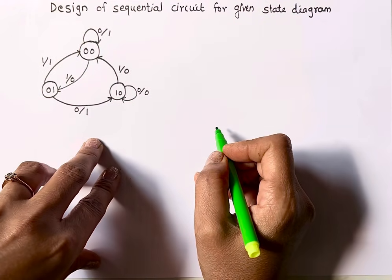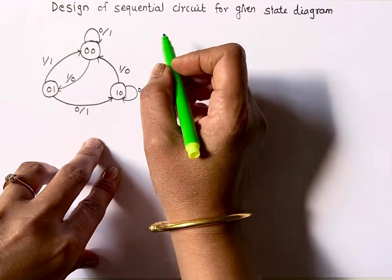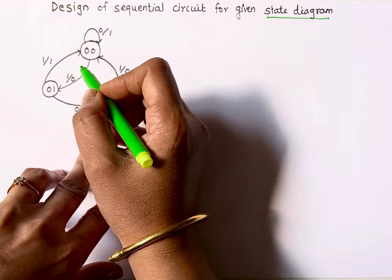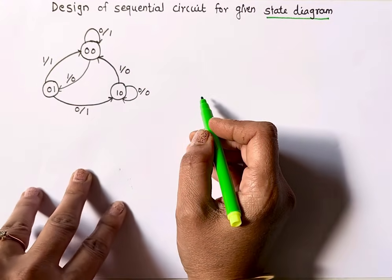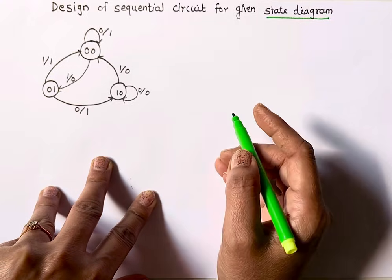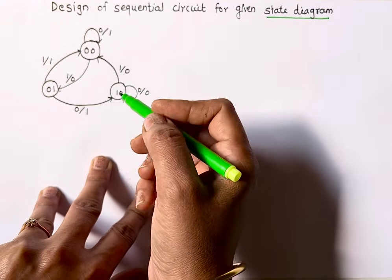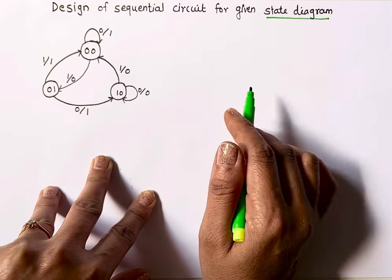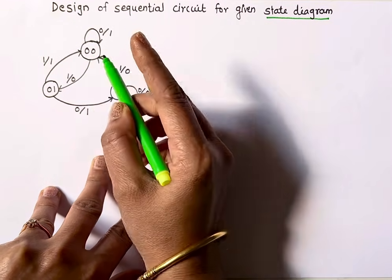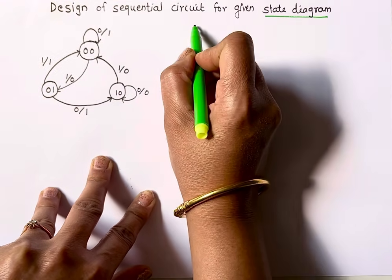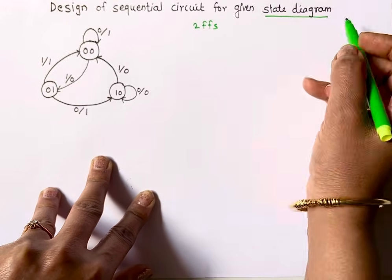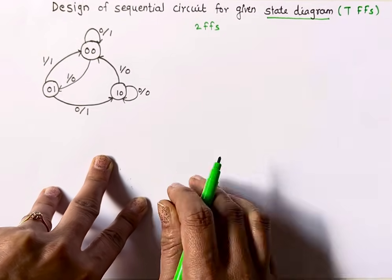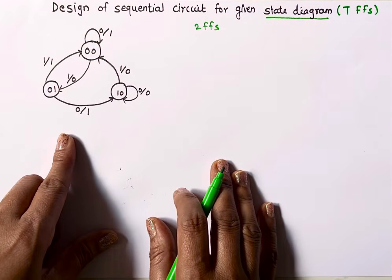Hello everyone, welcome back to my channel. You are learning with Dr. Shobha Nikam. In this video I'll tell you how to design a sequential circuit for a given state diagram. State names are generally represented as S0, S1, S2 or A, B, C, D. The first step is to identify how many flip-flops are required. Here in the state diagram, state names are already represented as 00, 01, 10, meaning state assignment is already done. Two bits are used, and since one flip-flop stores one bit, we need two flip-flops. I'll show you how to design the circuit using T flip-flops — simple toggle flip-flops.